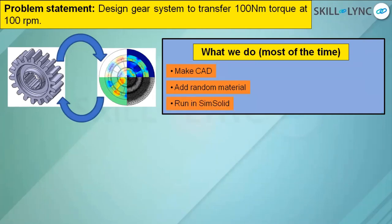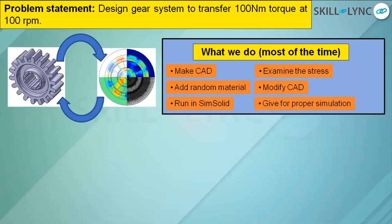Then we run it in SimSolid — a basic simulation software — and examine the stress coming in that area, then modify the CAD or make the profile better, and finally give a proper simulation. That is what students do most of the time. This is the basic understanding students have when first introduced into the R&D world of an actual OEM. If you follow this approach, you have to go through a lot of iterations — ITR stands for iterations — iteration one, two, three, and so on.